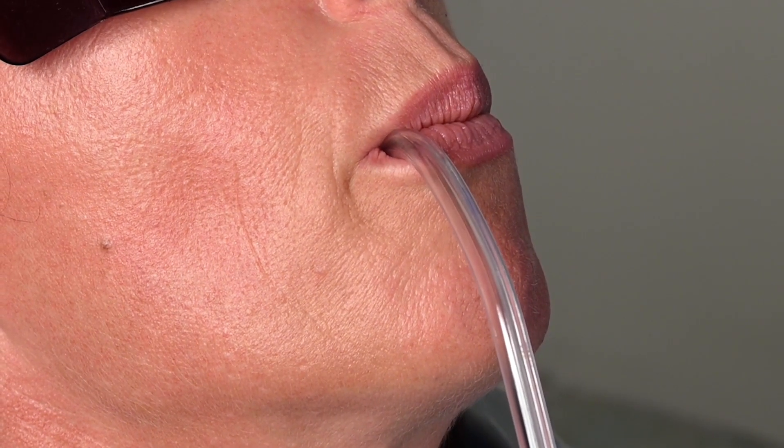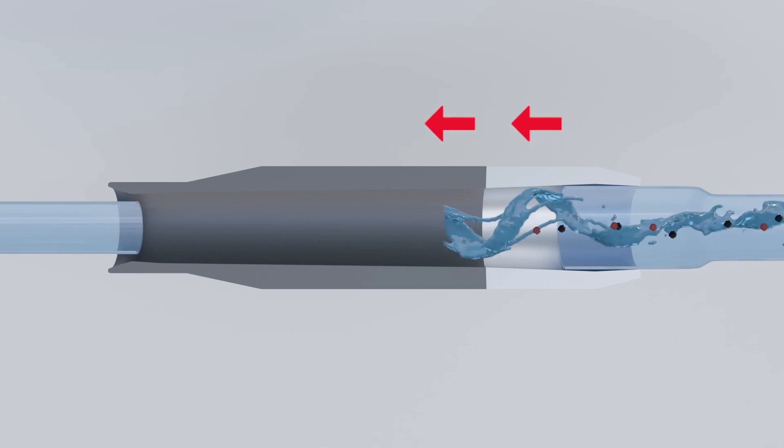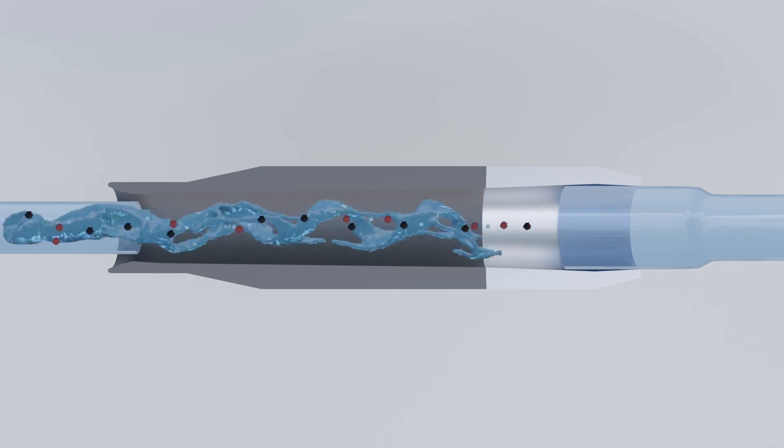When a patient closes their mouth around the saliva ejector, the pressure in the vacuum drops, increasing the risk of contamination being pushed back into the mouth. This could lead to transmitting pathogens and other biological material from the previous patient, thereby jeopardizing the current patient's health.